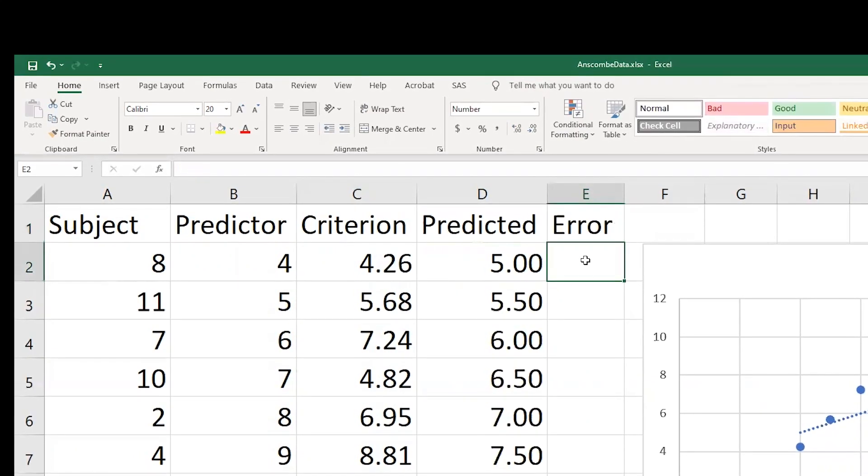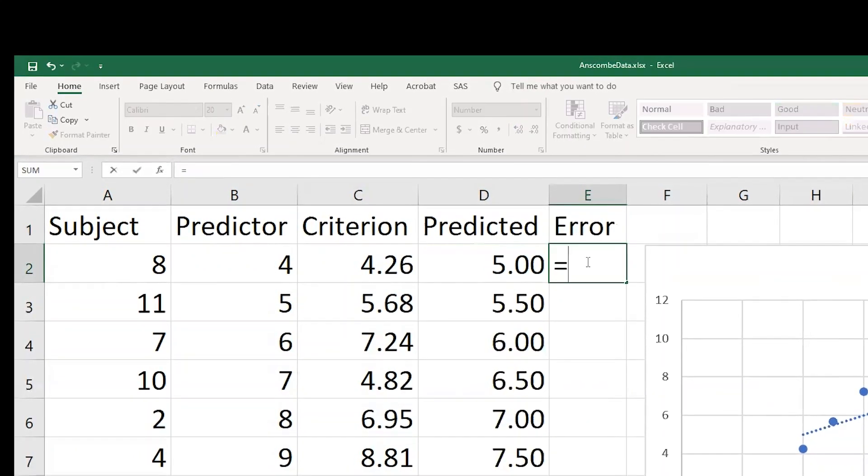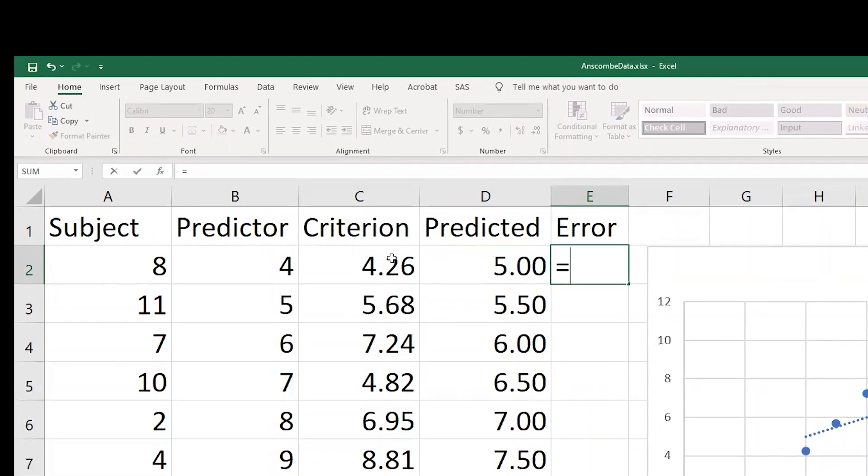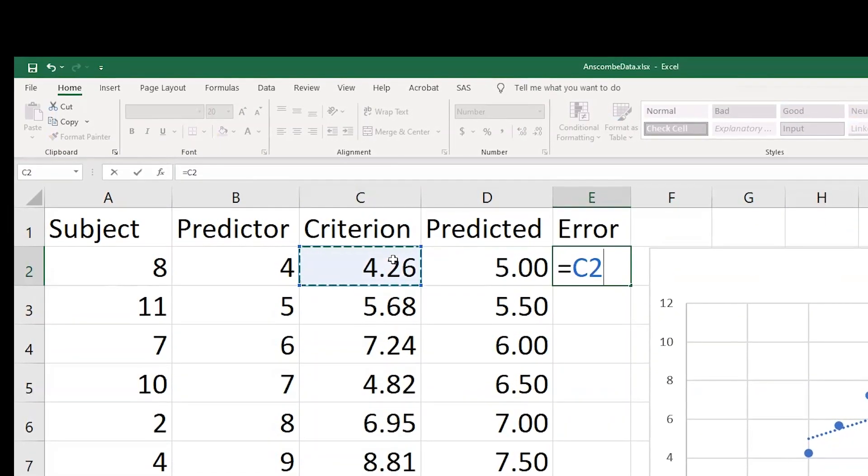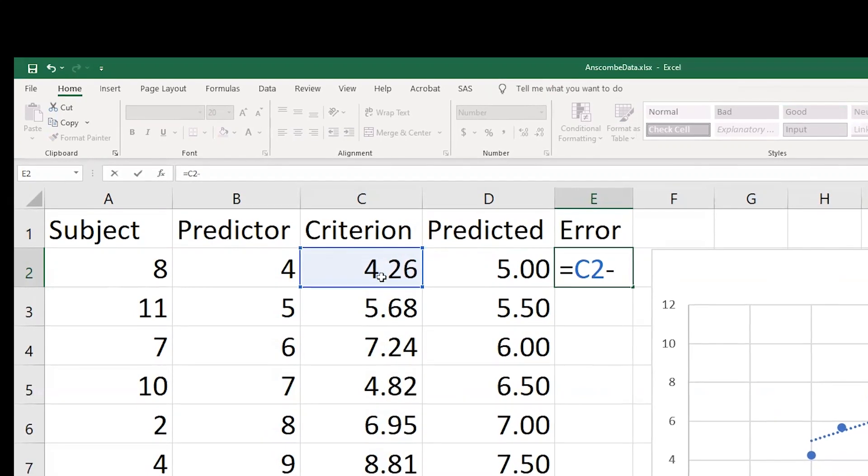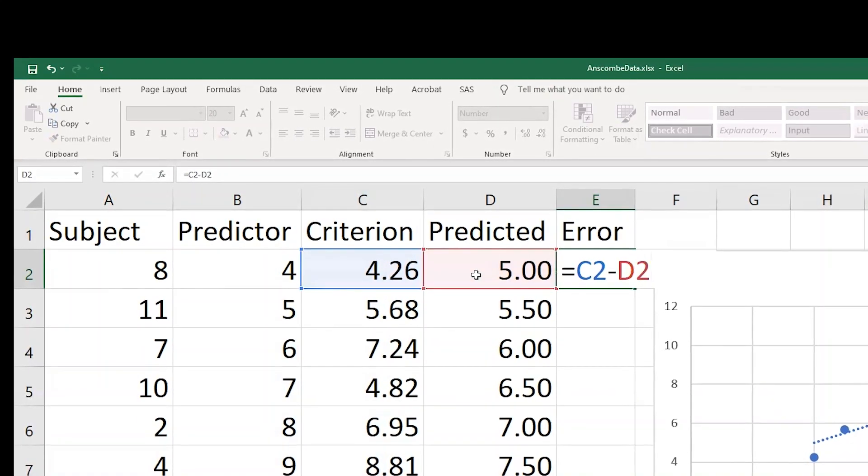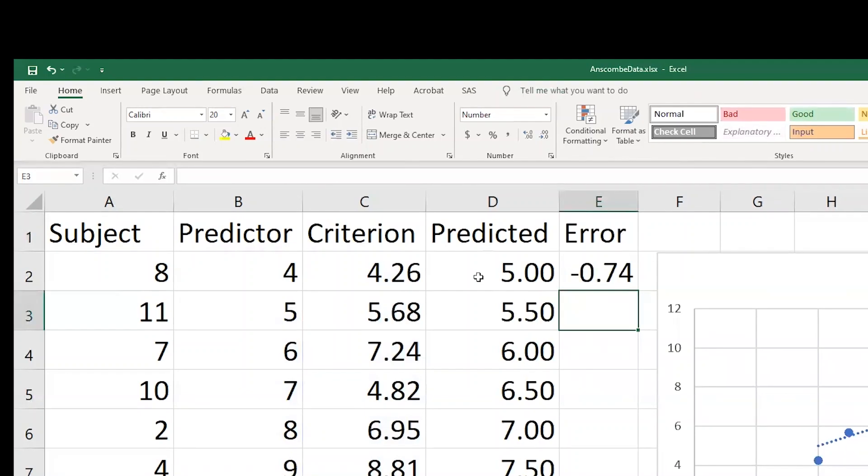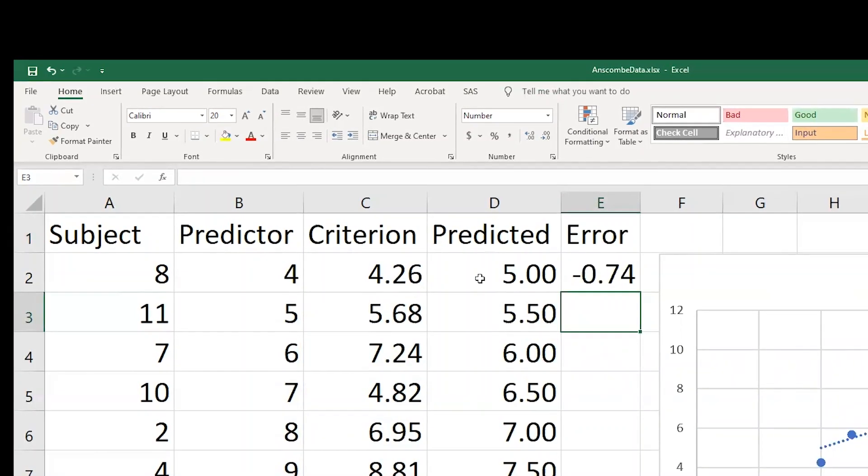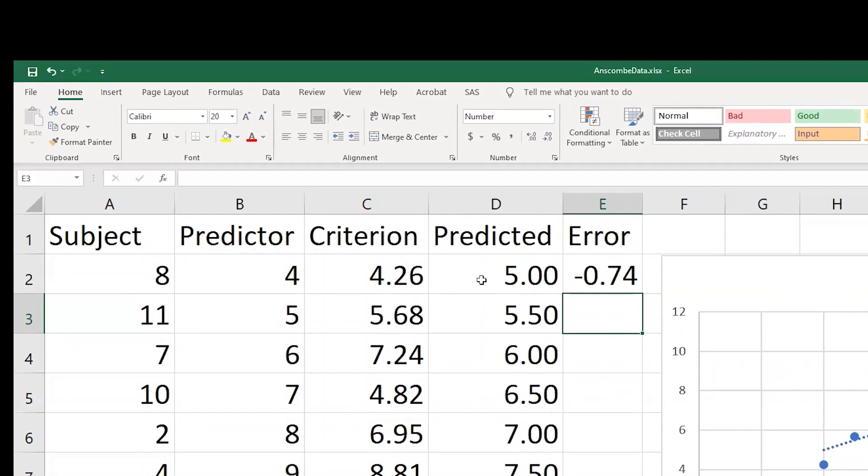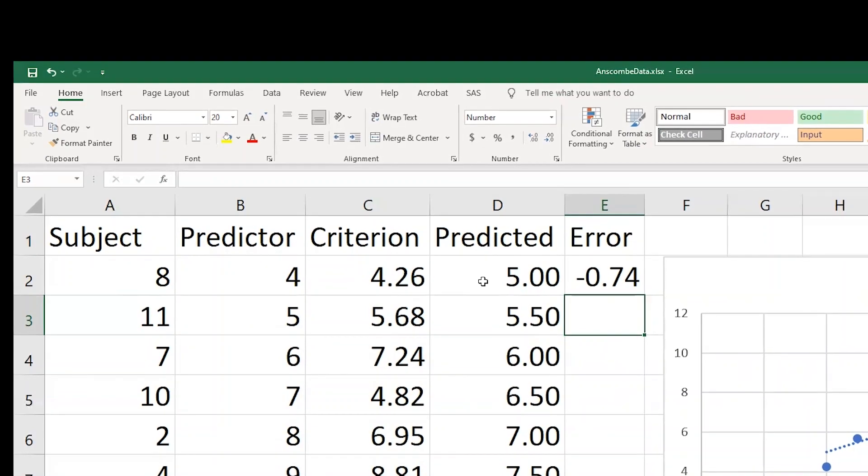And to calculate the error, I'm going to hit the equal sign and calculate the actual value of the criterion minus the predicted value. So for this first person, that's minus 0.74. So this person scored actually 0.74 lower than I predicted.